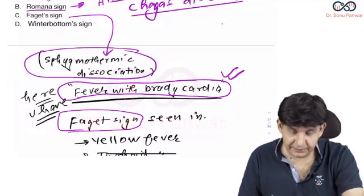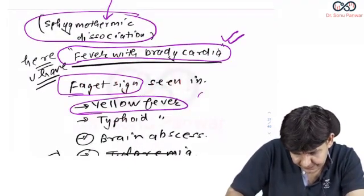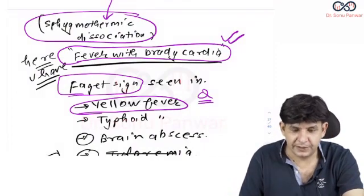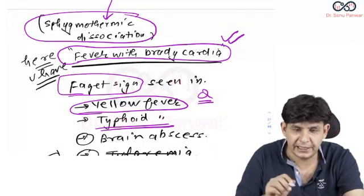Remember this can be a question: Faget sign is seen in what? It is classically found in yellow fever. It was discovered in yellow fever and is characteristically seen in typhoid fever also.